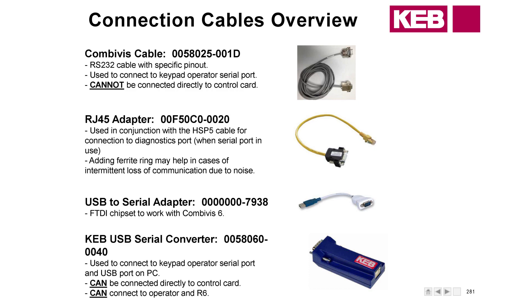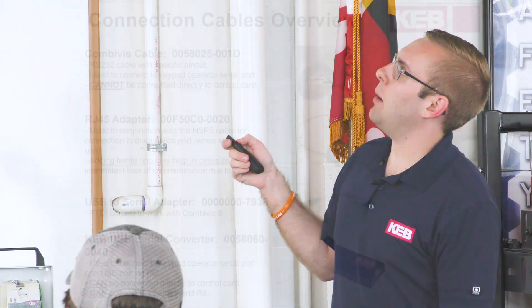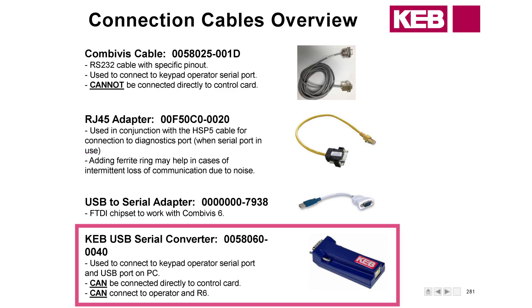The KEV converter can be connected directly to the control card and you can connect to the R6. Noise can affect the connection — you might be able to connect but drop your connection halfway through, or make parameter changes on the computer that don't make it to the drive. If that is the case, I recommend using a ferrite ring. For the most part though, I haven't seen too many issues with the KEV converter — these are what I prefer.